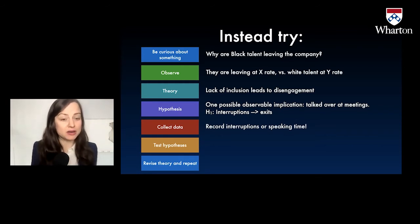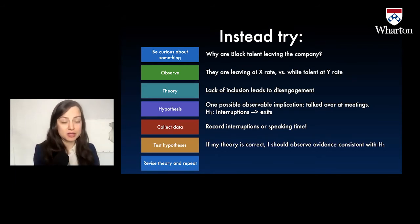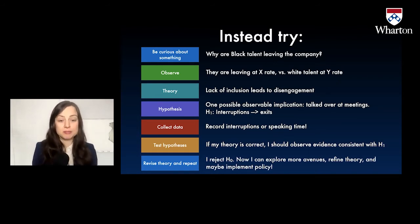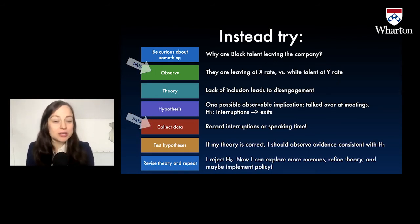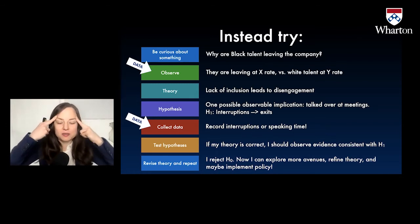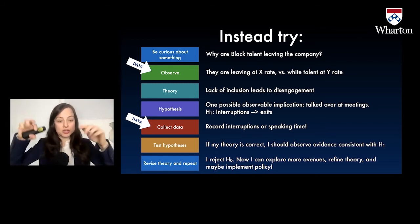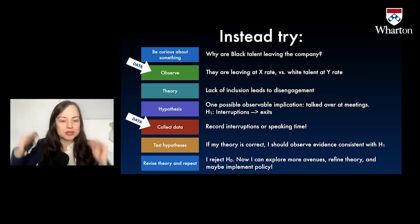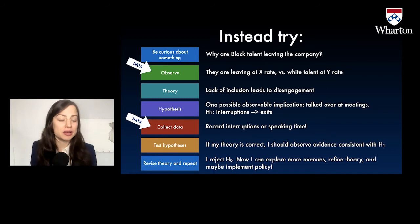Now I know to collect data on speaking time, and if my theory is correct, I should observe that being interrupted predicts leaving. If I do observe that, I can then refine my theory, explore more avenues, and implement policy. The only two stages in our data analysis that actually involve data are observation and collection and testing. Otherwise, it's all thinking. When we think data science, we tend to think spreadsheets and graphs and data dashboards, but it's actually mostly sitting and thinking really hard about what to look for and how to know if you've learned something.